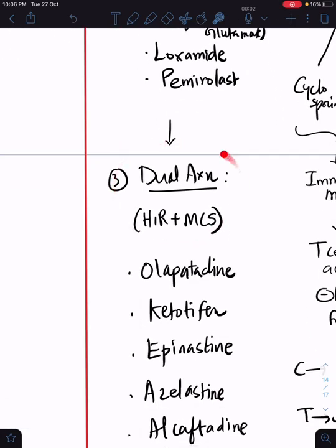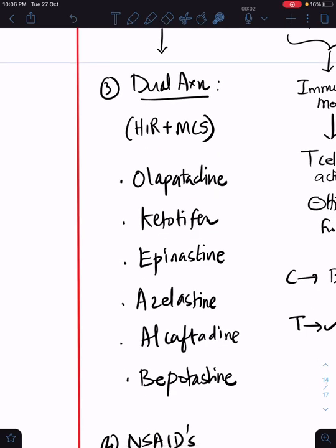What we commonly use these days is going to be a dual action or combination of H1 receptor with mast cell stabilizers: olopatadine, ketotifen, epinastine, azelastine, alcaftadine, and bepotastine. You might have commonly encountered these drugs. Alcaftadine and bepotastine are the newer generation. They say it's more potent than olopatadine, but clinical evidence does not say this is superior or inferior. Almost all are the same, so people can prefer olopatadine, bepotastine, or alcaftadine.